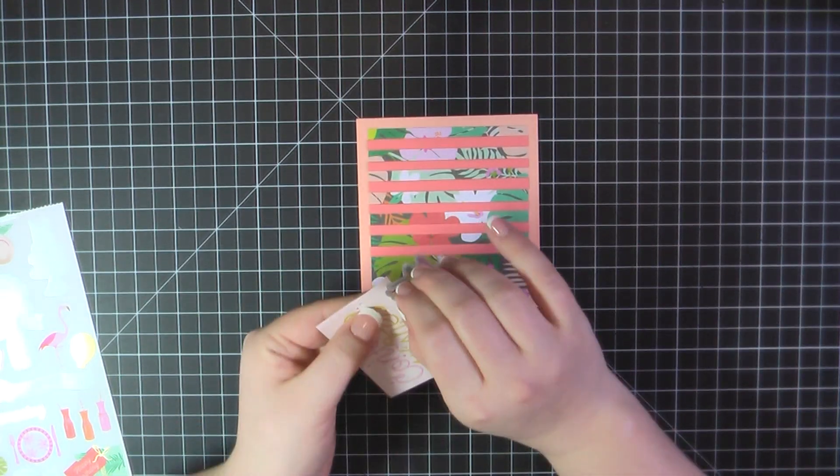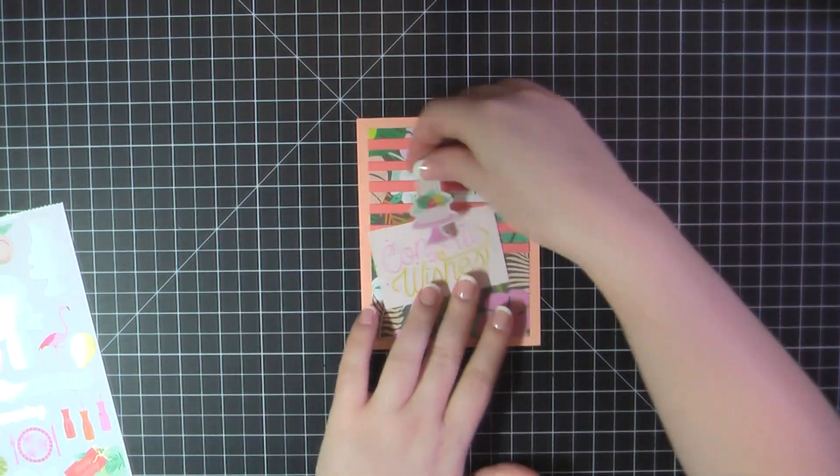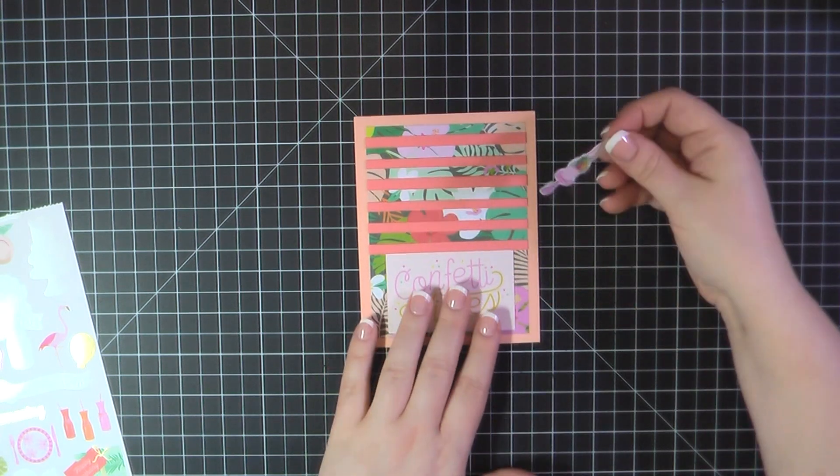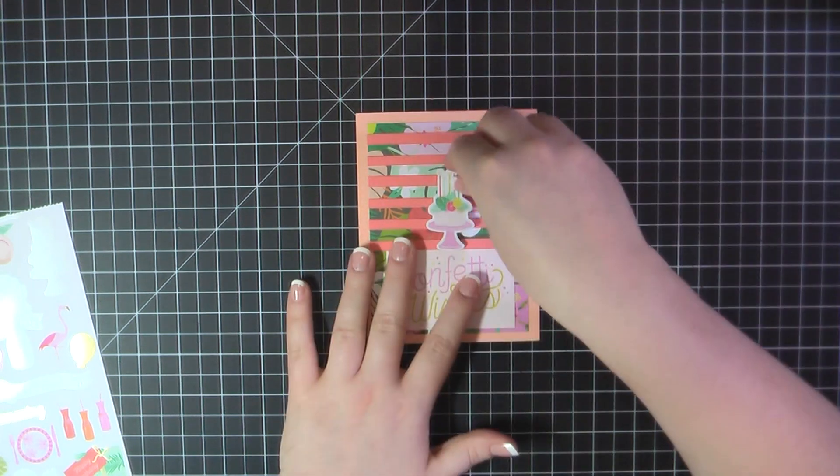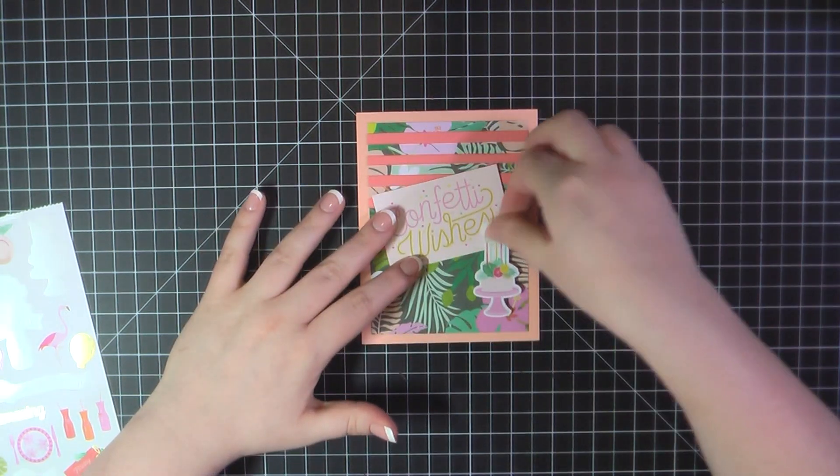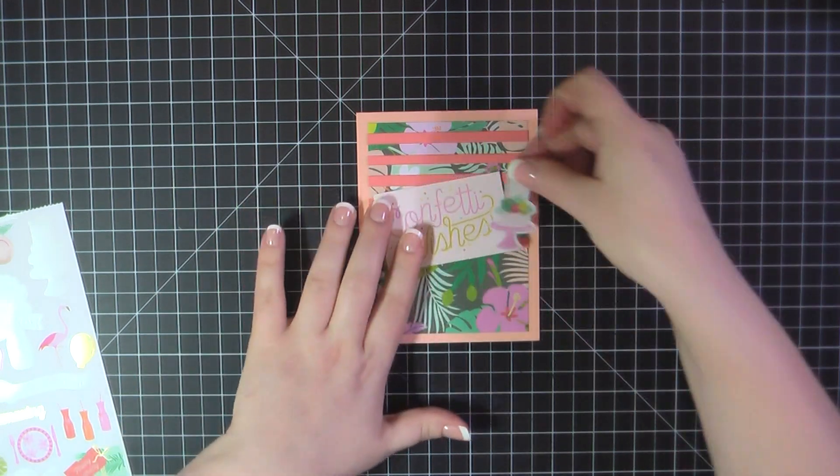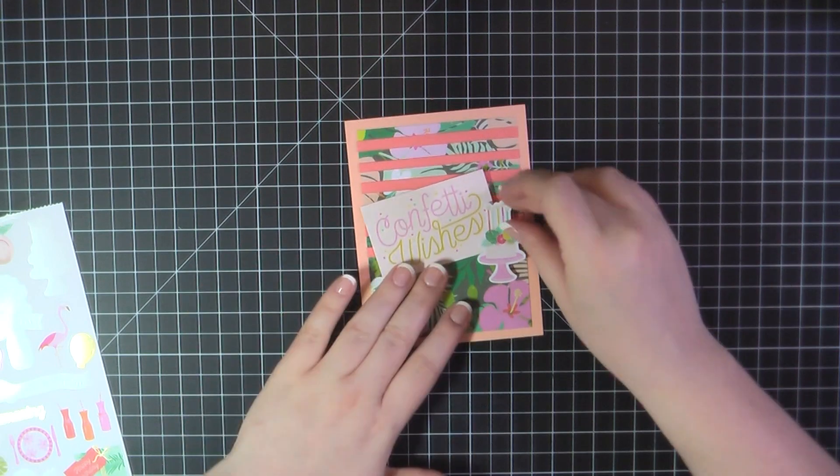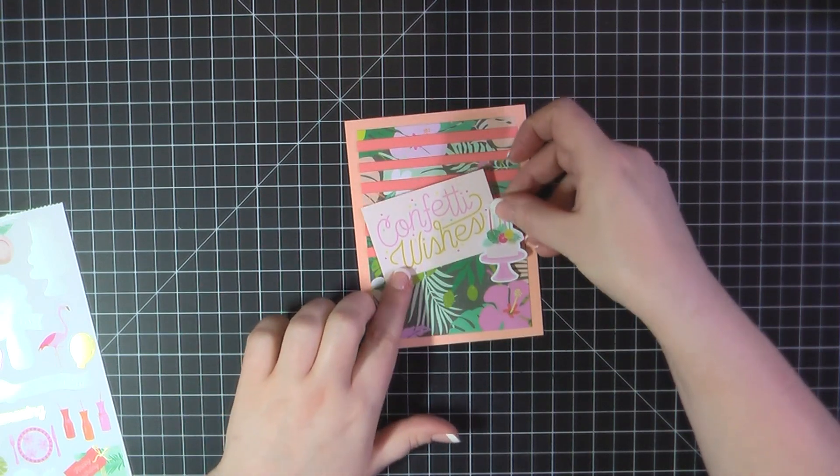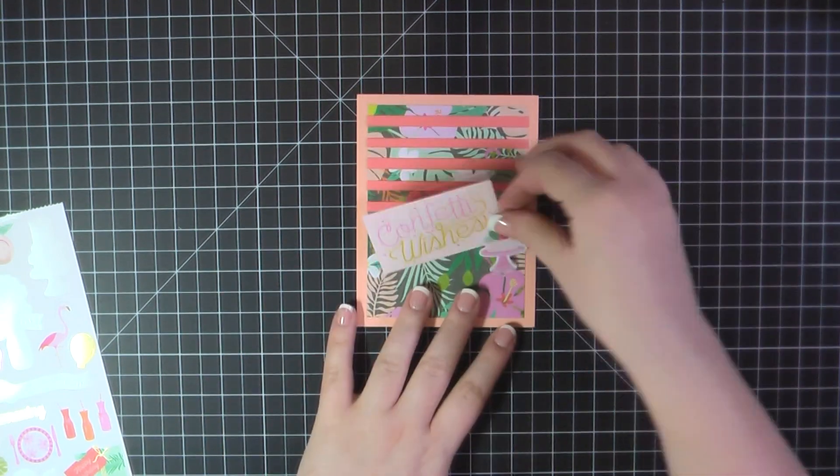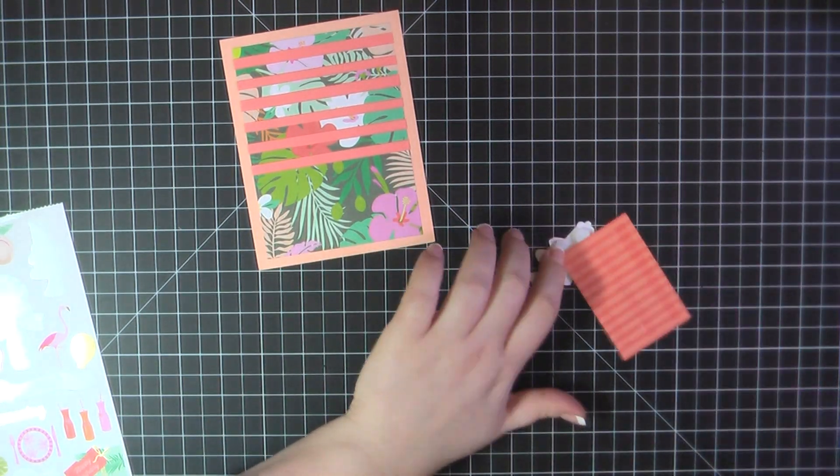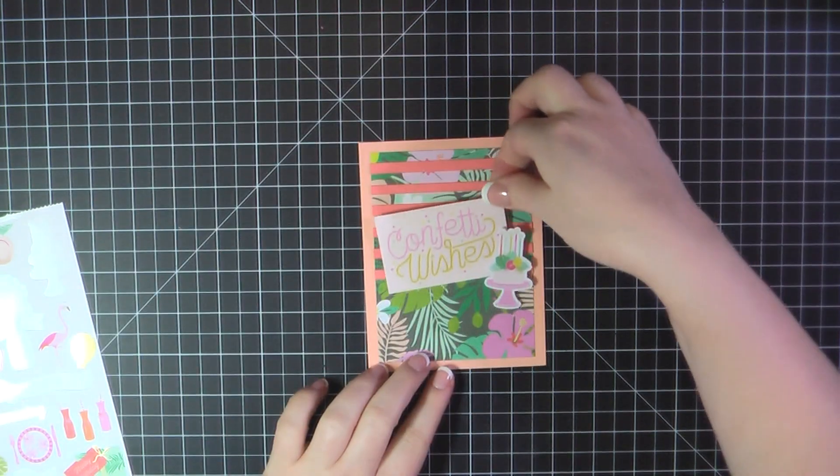So back to the card here, I'm going to fuss around with this for a little bit longer trying to decide how I want to place these two things on the front here. I will eventually go back to the way that I originally had it. I'll add some ATG to the back of that cut apart and then I'm going to place that down on the front of the card.